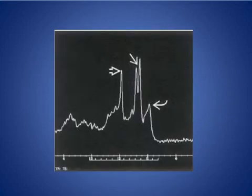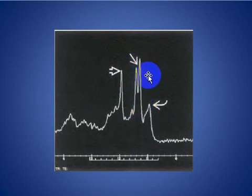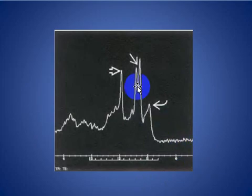MRI spectroscopy of the abscess cavity shows a double peak of large lactate and a large peak of acetate, with a small peak of cytosolic amino acids — consistent with abscess.